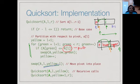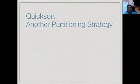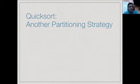After those two recursive calls to Quicksort, we are done. This partitioning strategy can also be implemented in a different way — in fact this is the original partitioning strategy proposed by Tony Hoare. In his original strategy, instead of starting from one end and sweeping, you start at opposite ends.